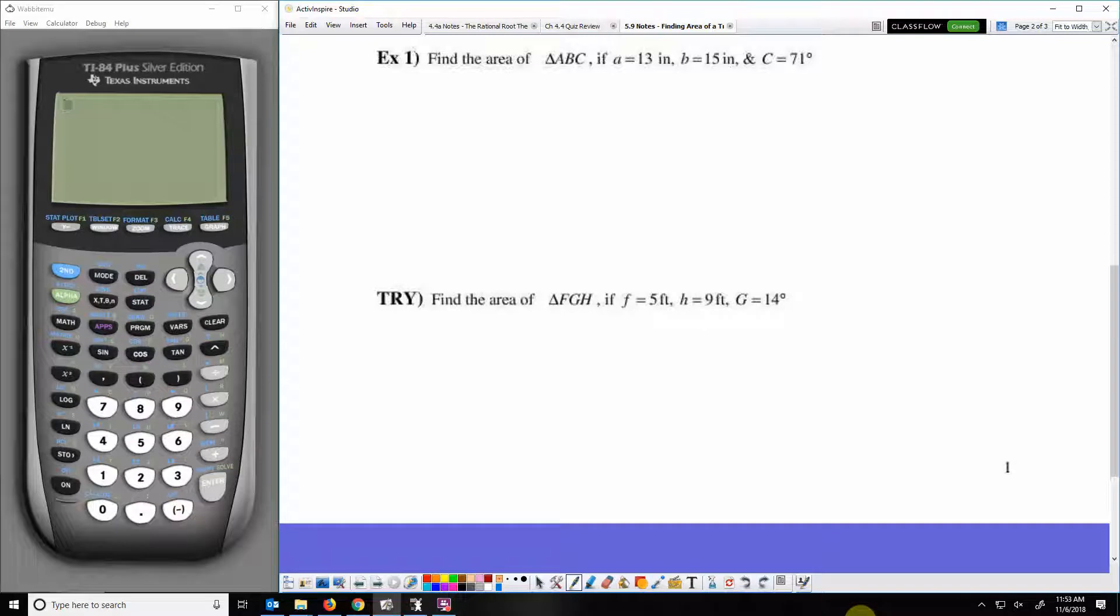Hey guys, today we're going to talk about finding the area of a triangle when you're given either side-angle-side or side-side-side. We've used the area formula one-half base times height. But if you are given a triangle like this one, where you know side A is 13 inches, B is 15 inches, and C is 71 degrees, area equals base times height isn't quite going to be the easiest way to do it.